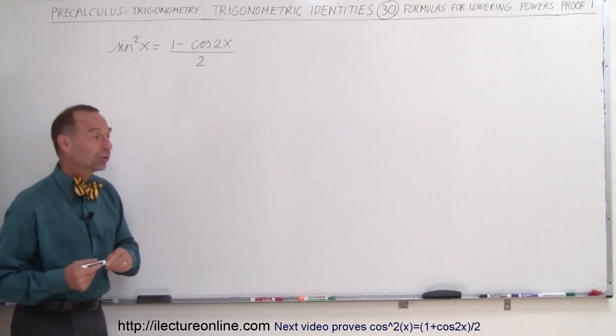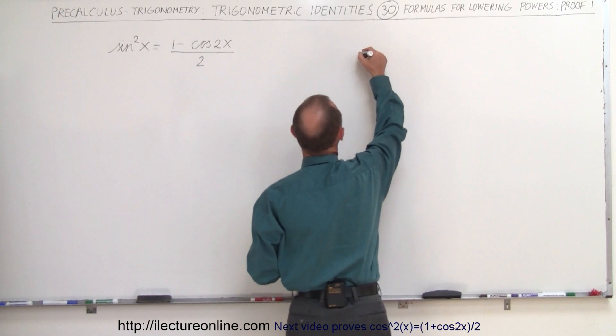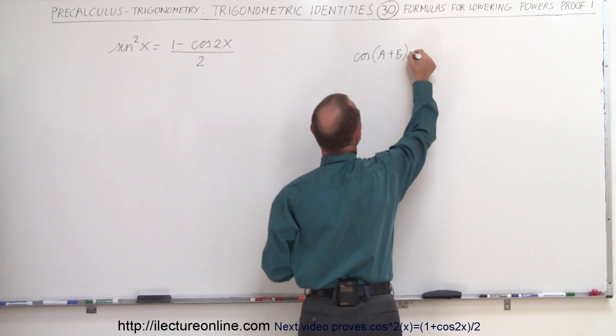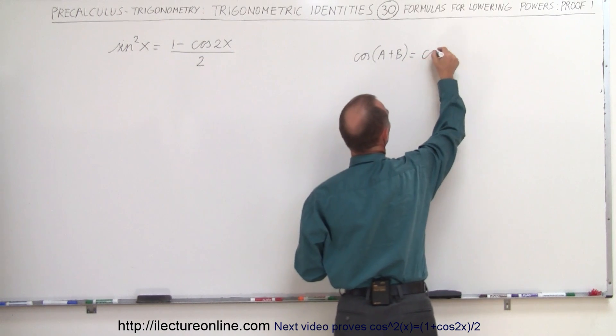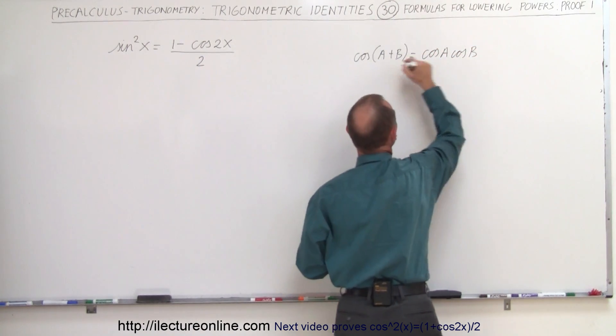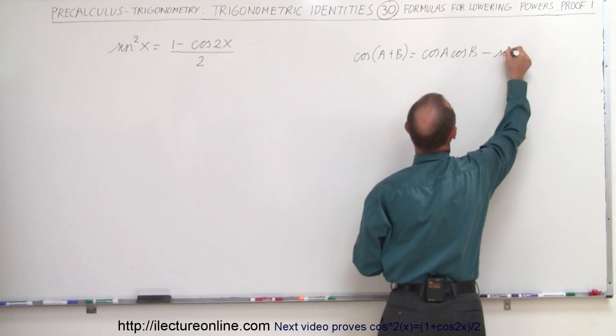Well, it all goes back to this equation, or at least this identity, where we have the cosine of A plus B. Now, if you remember what that was equal to, that's equal to the cosine of A, cosine of B, and if this says plus, then this becomes minus sine A sine B.